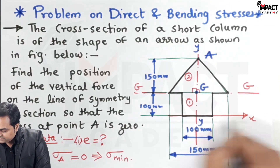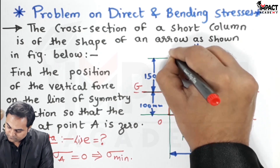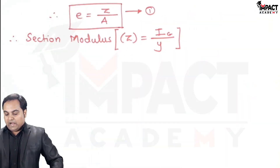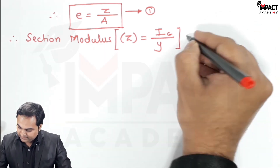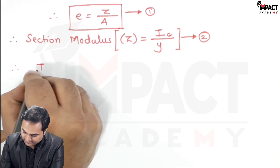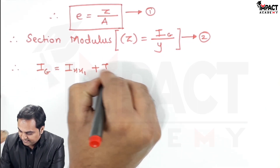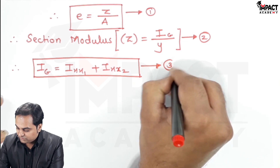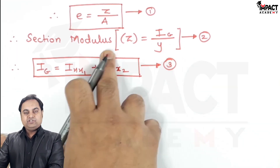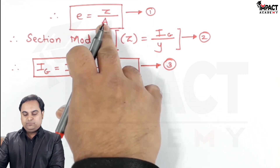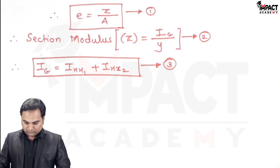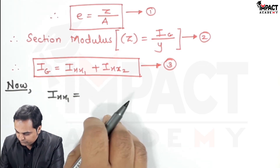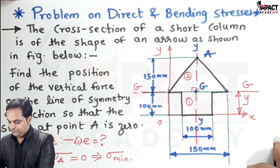The section modulus Z equals I_G divided by y, where y is the distance from the centroid to the extreme fiber along the x-axis. I_G is given by I_xx1 plus I_xx2 since we have two areas — this is equation three. Once I find I_G, I put the value in equation two to get section modulus, then put section modulus and area into equation one to get the eccentricity.